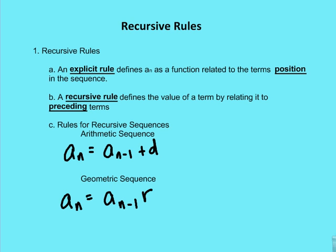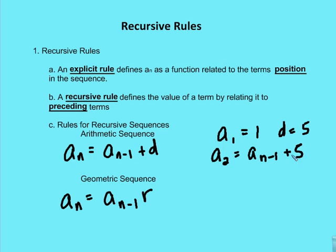Let's think about an example. If I had a sub 1 equal to 1, and I knew that the common difference was 5, I could write a rule that says a sub n is equal to a sub n minus 1 plus the common difference of 5. So I can figure out what a sub 2 is, because I know a sub 2 minus 1 is a sub 1, and I know the preceding term's value. So a sub 2 is equal to 1 plus 5, which equals 6.